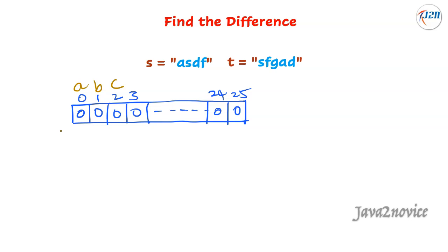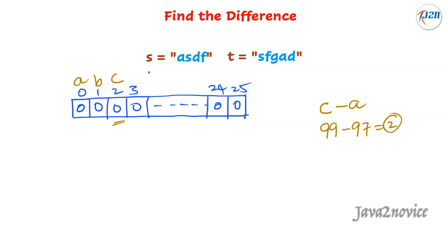If we want to find the index number for character C, then it is character C minus character A. This equals the ASCII value of character C minus ASCII value of character A, which is 99 minus 97. The difference is 2. Index 2 is represented by character C. This is how we will calculate character index positions.